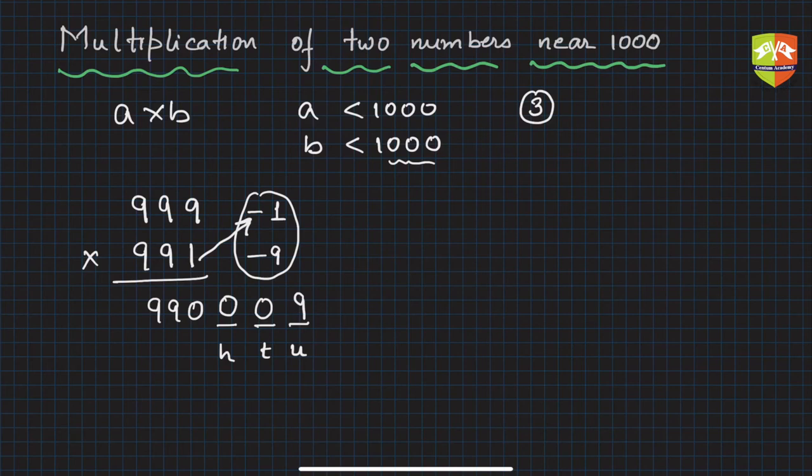Let's take another example. We're doing 992 × 991. Preserve HTU. Now this is just for your understanding—later on, once you're habituated and your practice is enough, you don't need to do all these steps. You can do it mentally. Just to illustrate, I'm writing all the steps.